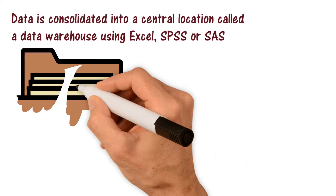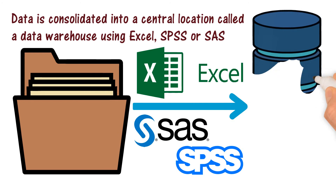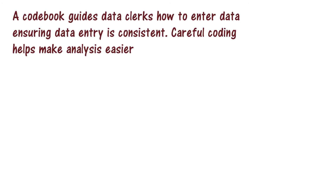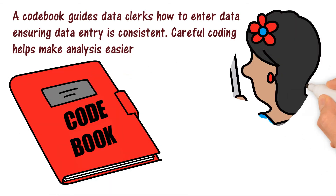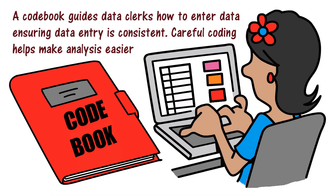Data is consolidated into a central location called a data warehouse using Excel, SPSS or SAS. A codebook guides data clerks how to enter data ensuring data entry is consistent. Careful coding helps make analysis easier.